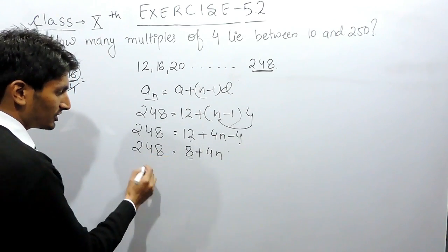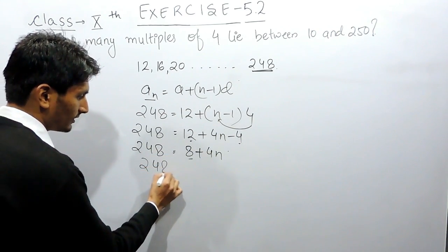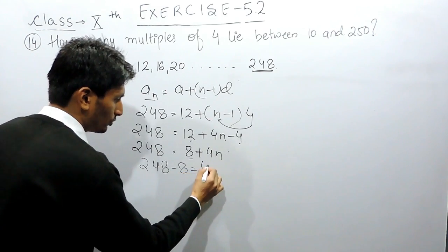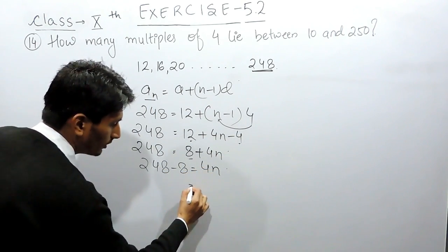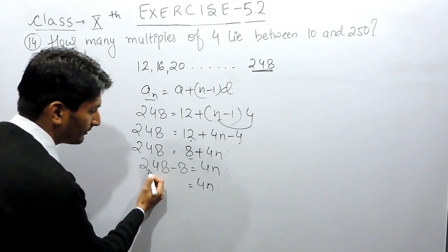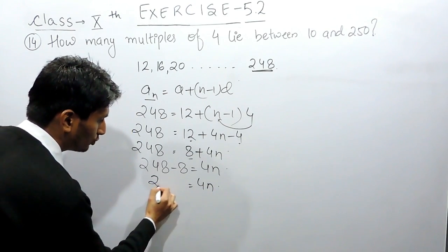Now this constant can be shifted to this side. 248 minus 8 equals to 4n. Now this is 4n. And 248 minus 8 is 240.